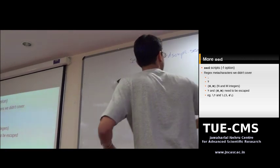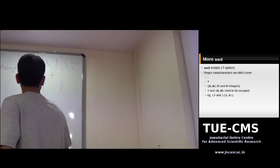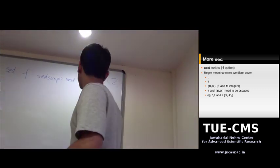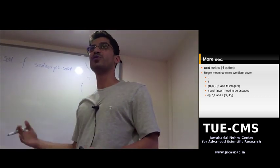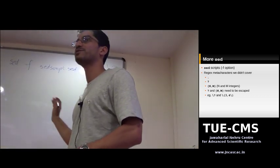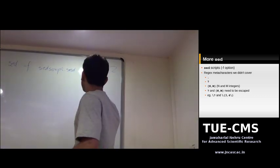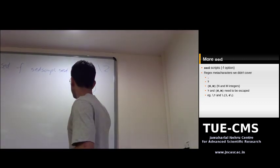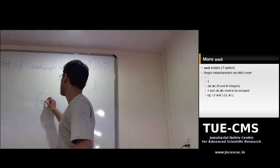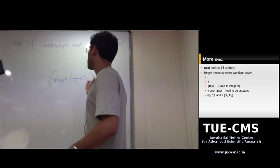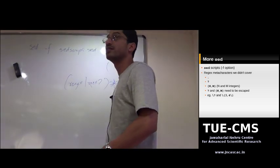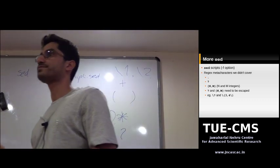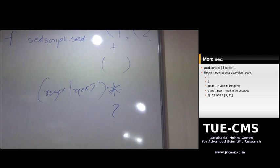We're coming to the end of our sed session. There are some regular expression metacharacters we didn't cover. We finished the star. There's one more called question mark. This is exactly like star and plus: plus is one or more, star is zero or more, question mark is zero or one — zero or one occurrence of whatever comes before it. Just as the plus and star modify the pattern which comes before them, the same goes for the question mark.